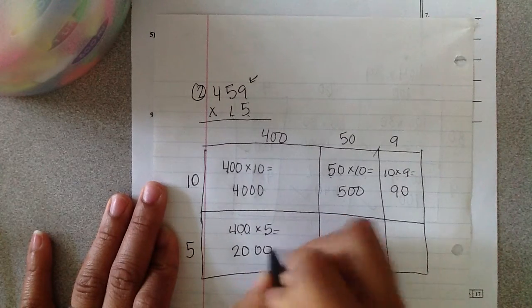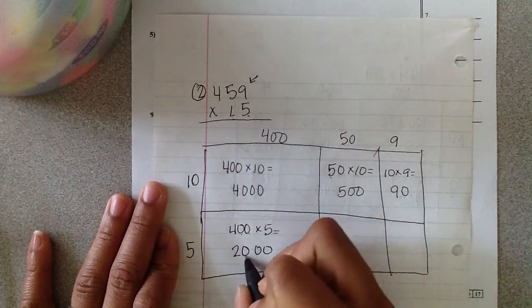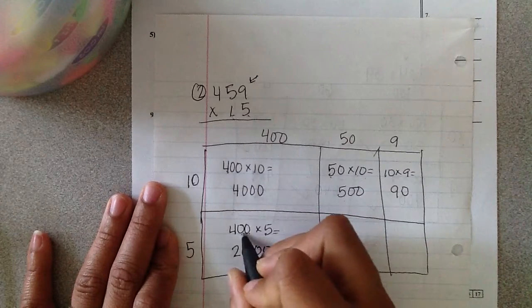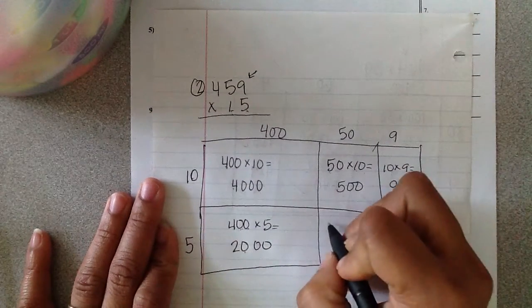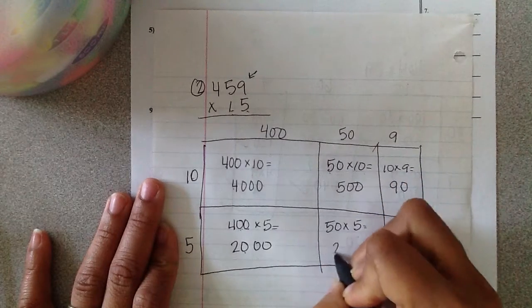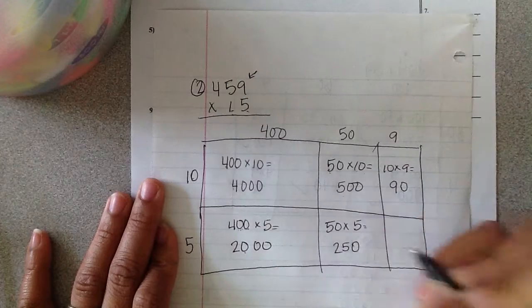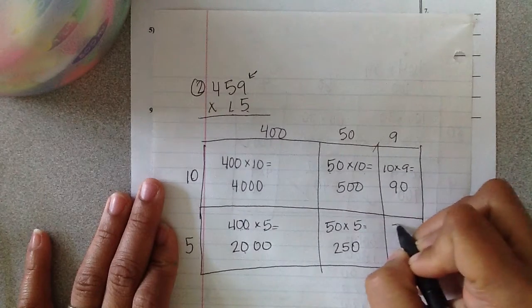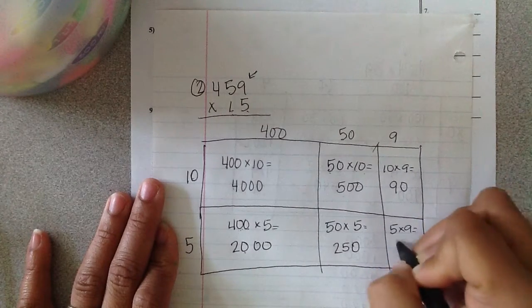Four hundred times five. Five times four is twenty. Now I have to be careful. I still have two more zeros to add. This answer already had a zero in it, but I can't forget about my two zeros in my factors. Fifty times five is twenty-five. Add my zero. And then five times nine is forty-five.